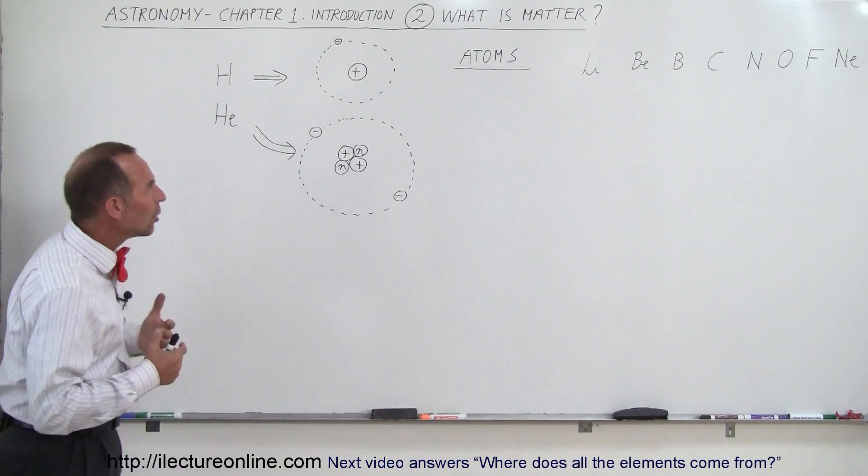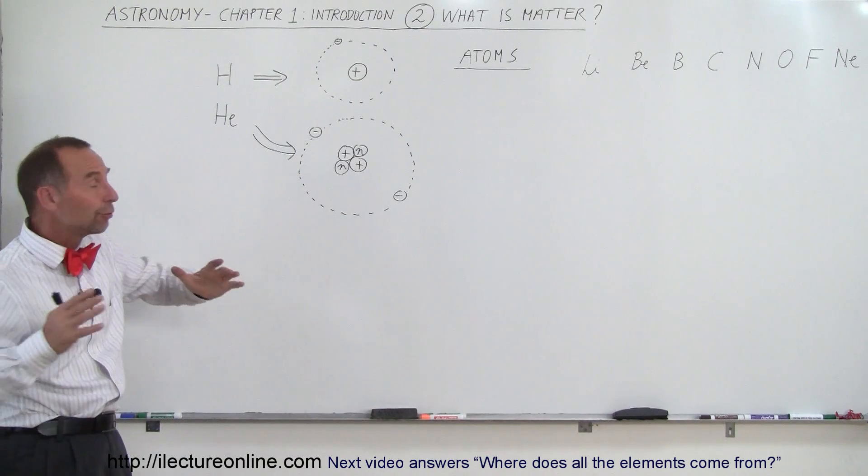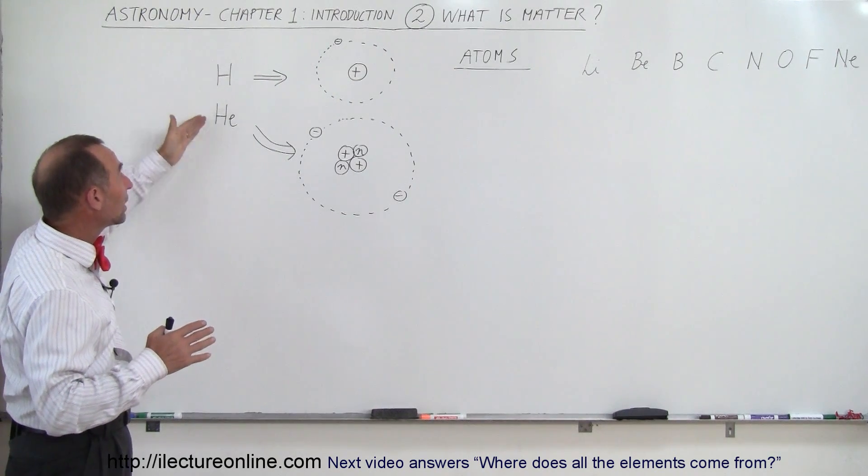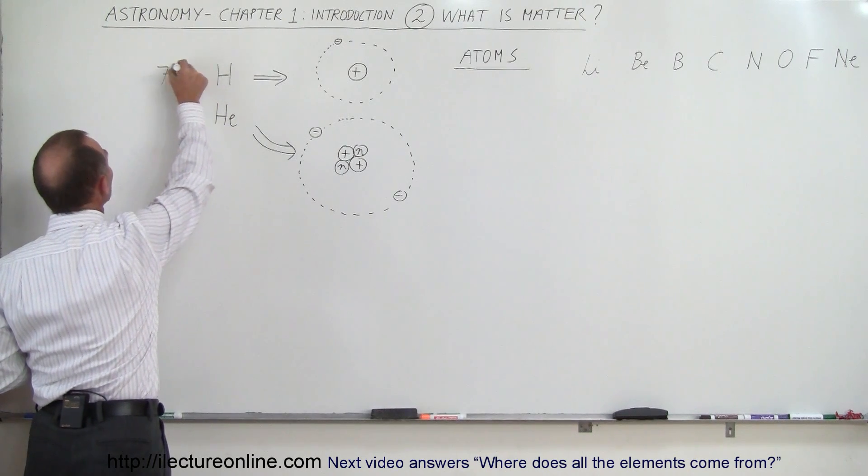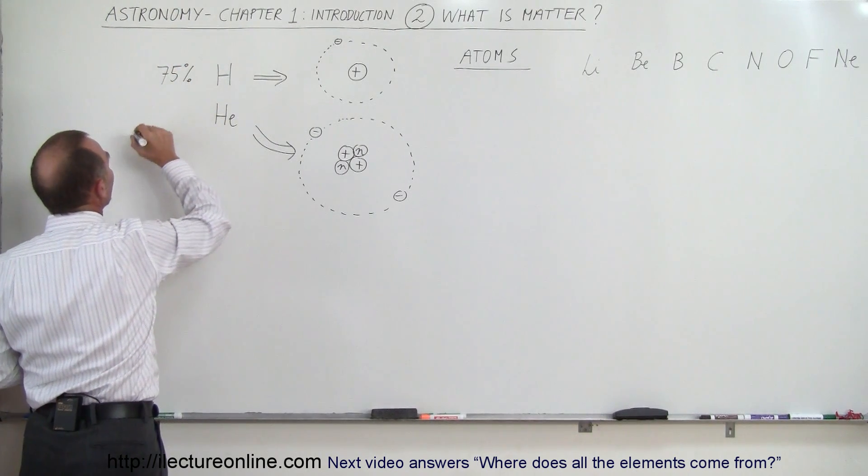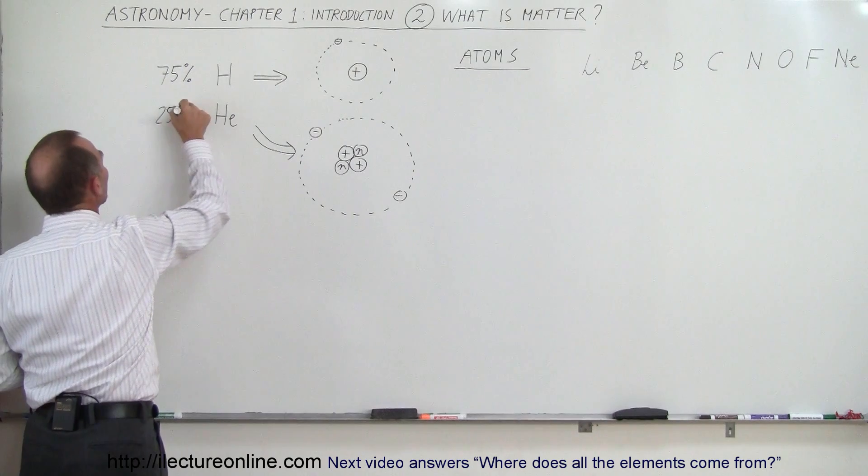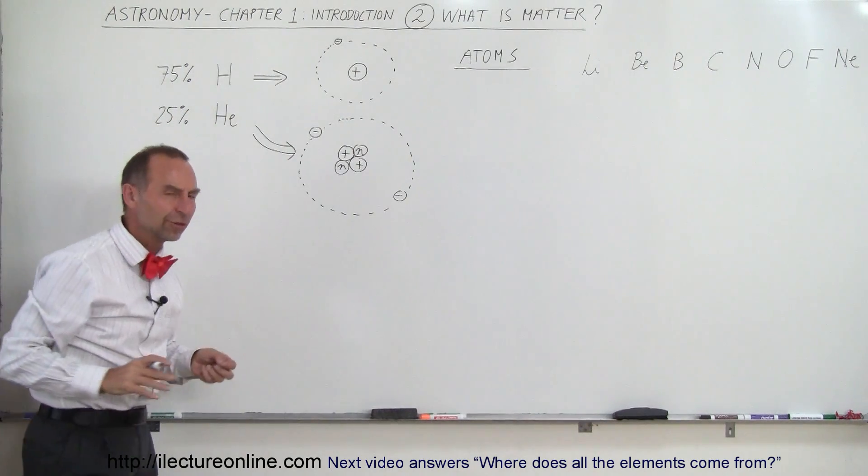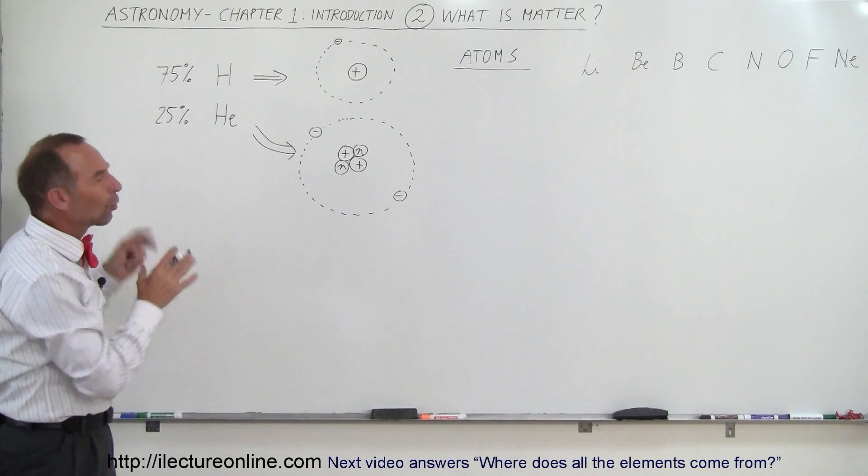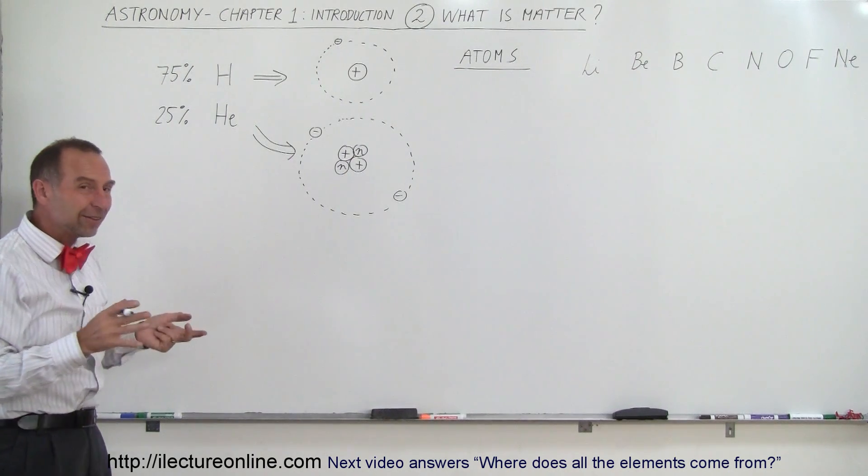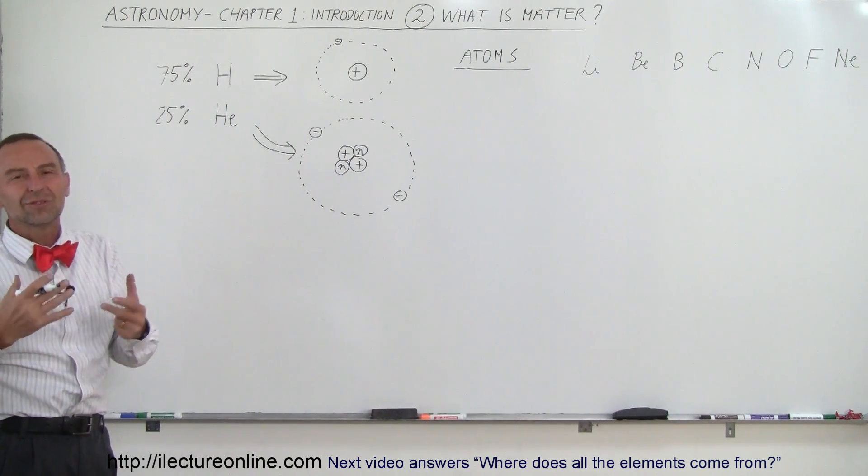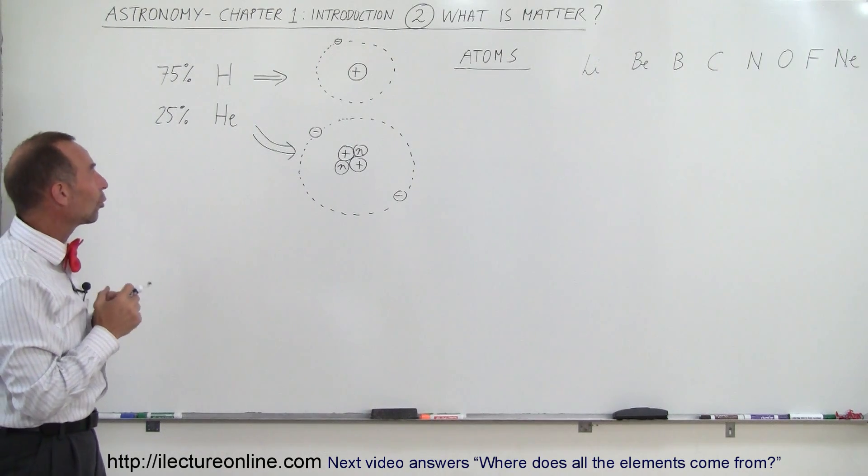Well we already know that 99% of all the matter in the universe is either hydrogen or helium. It turns out that hydrogen makes up about 75% of the whole universe and helium makes up about 25% of the whole universe. They add up to 100% of course but that's not quite the totality of all the matter in the universe. Together hydrogen and helium is about 99% of the total mass.